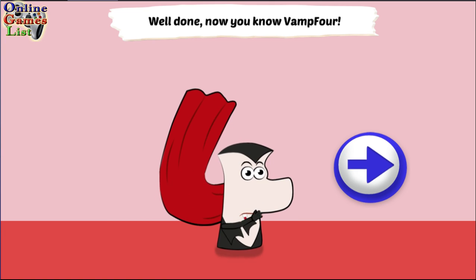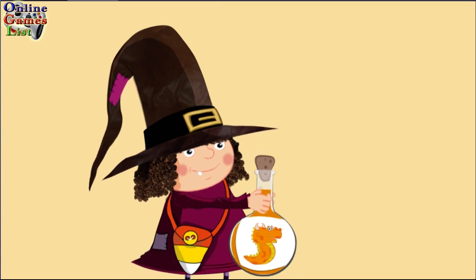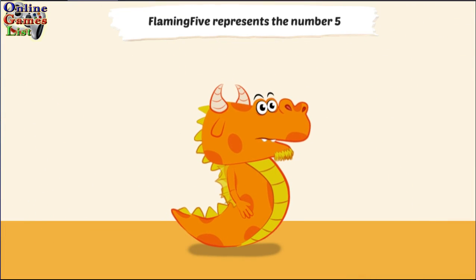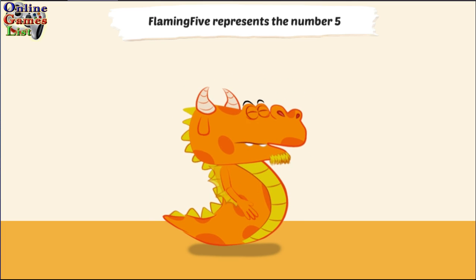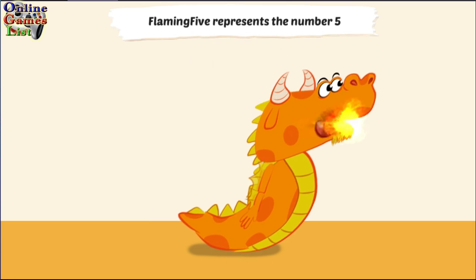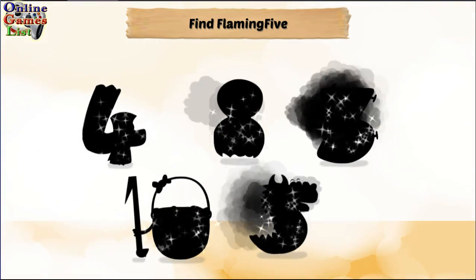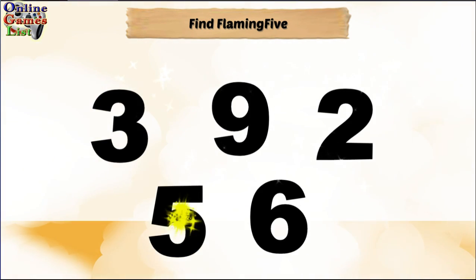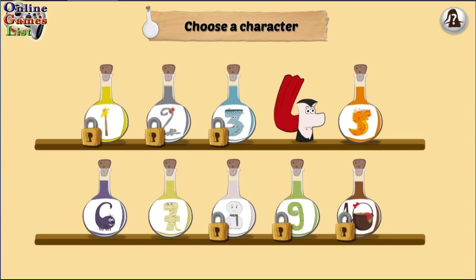Well done! Now you know Vamp 4. Flaming 5 represents the number 5. Flaming 5 is a dragon who likes setting fire to things. He can't help breathing flames. Flaming 5 is a dragon. Well done! Now you know Flaming 5 is a dragon.